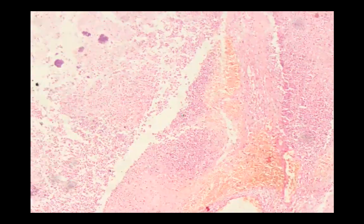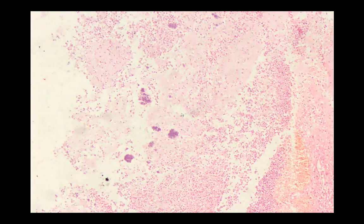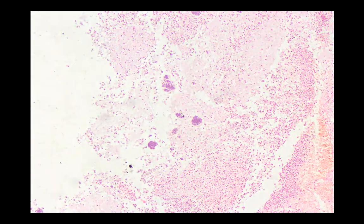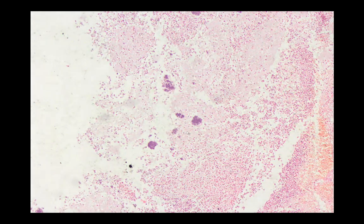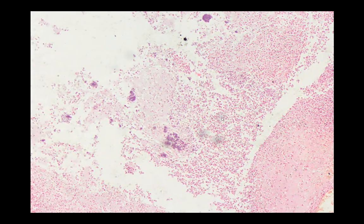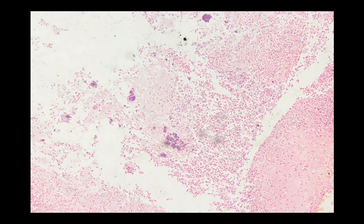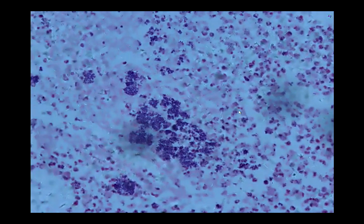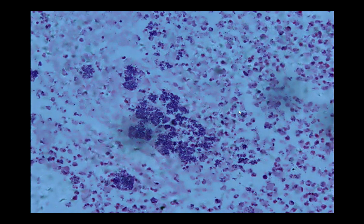One important feature here is that you can identify the presence of organisms. Let's go first with the low-power magnification so that you would appreciate — these are bacterial colonies on low-power magnification. These are accompanied by a lot of inflammatory cells.